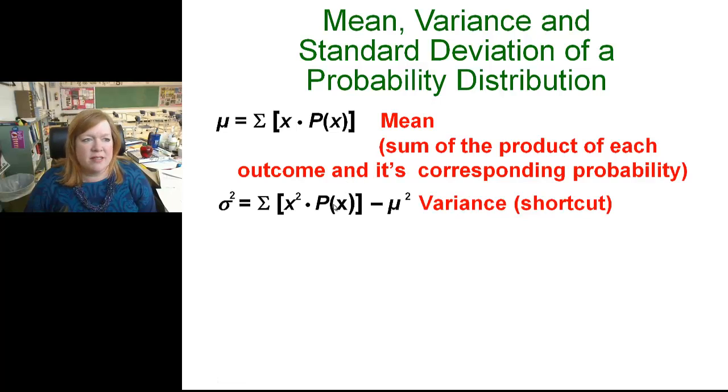To find the variance, this is the shortcut thing, you take the square of each possibility times its probability, you add those up, and then you subtract the mean, which you found here.